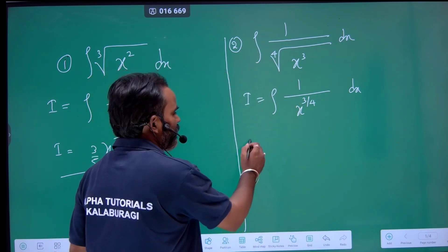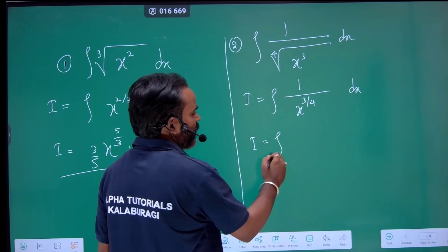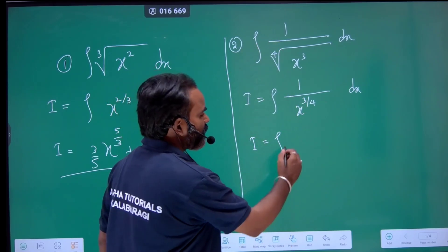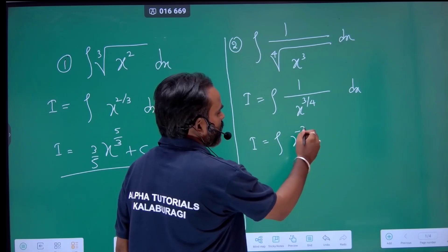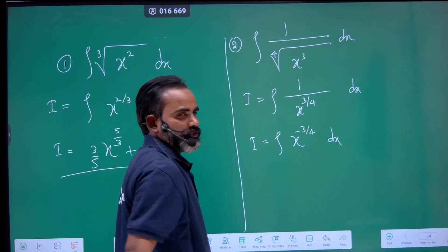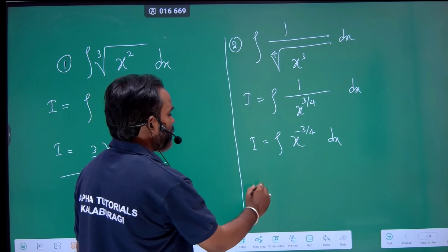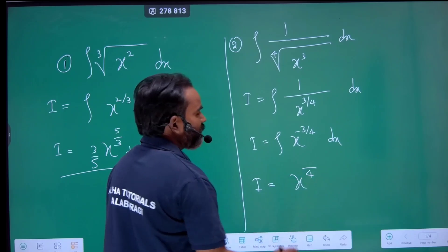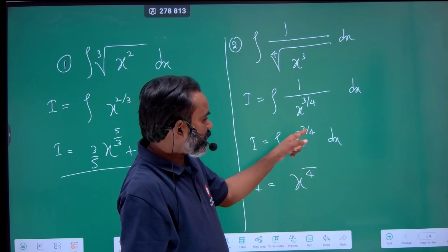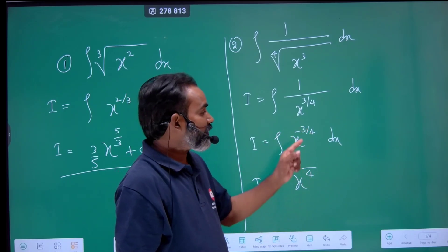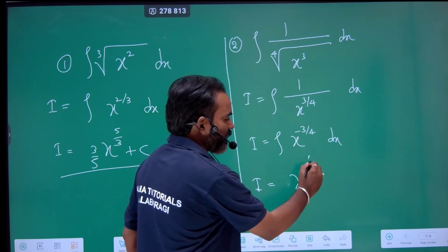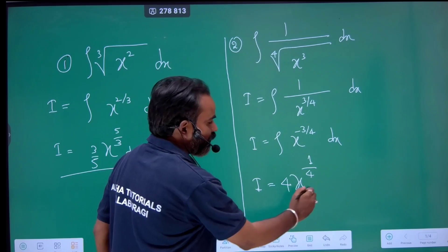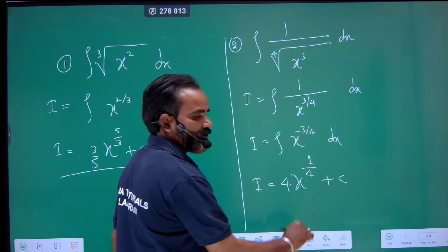Now the formula is different. x to the power of minus 3 by 4. The integration: we should add 1 to the numerator and denominator. It's minus 3 plus 4, which is 1. The reciprocal is 4 by 1 — it's simply 4.